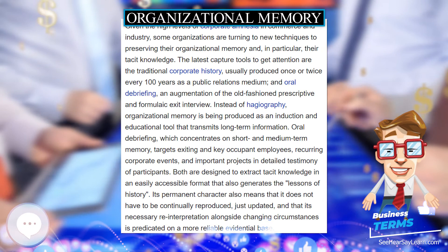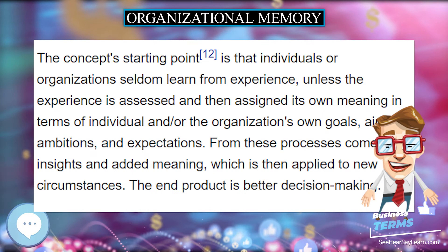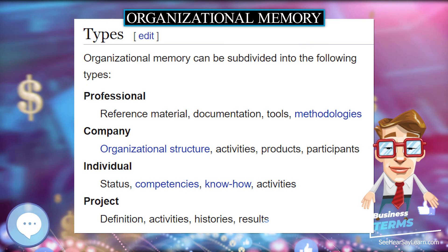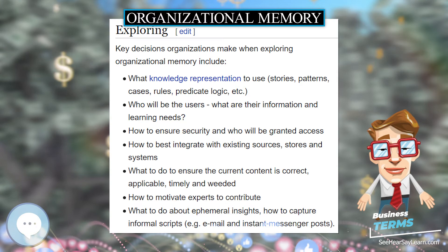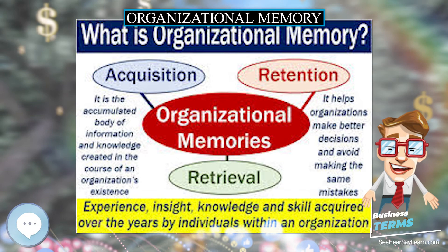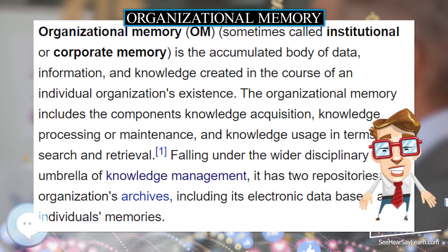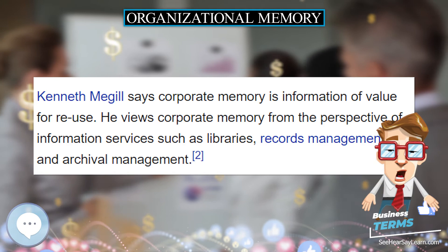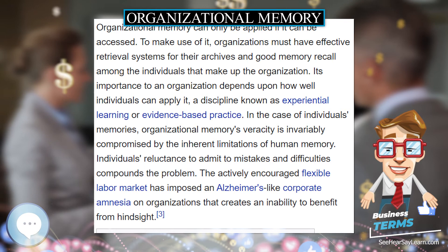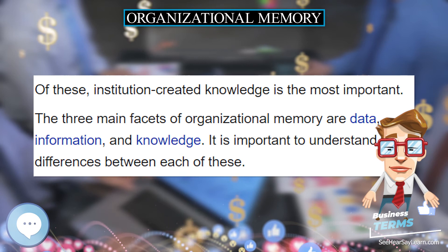Its permanent character also means that it does not have to be continually reproduced, just updated, and that its necessary reinterpretation alongside changing circumstances is predicated on a more reliable evidential base. When it comes to experiential learning, an awareness of both the explicit and tacit components of organizational memory on their own is not generally enough to create new knowledge efficiently. As a general rule, it needs to be accompanied by a focused learning phase. Most models of experiential learning are cyclical and have three basic phases. The concept's starting point is that individuals or organizations seldom learn from experience unless the experience is assessed and then assigned its own meaning in terms of individual and organizational goals, aims, ambitions, and expectations. From these processes come insights and added meaning, which is then applied to new circumstances. The end product is better decision-making.